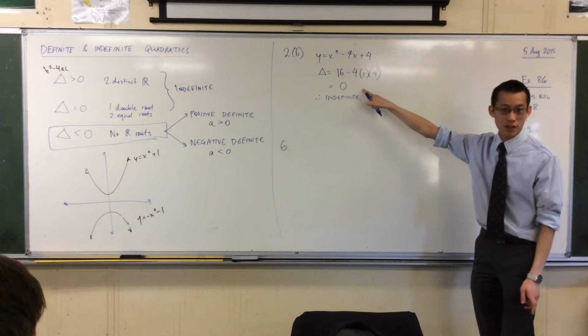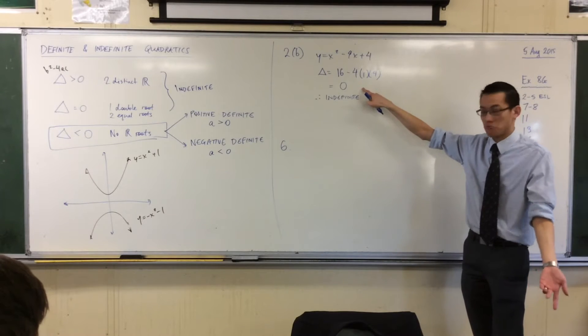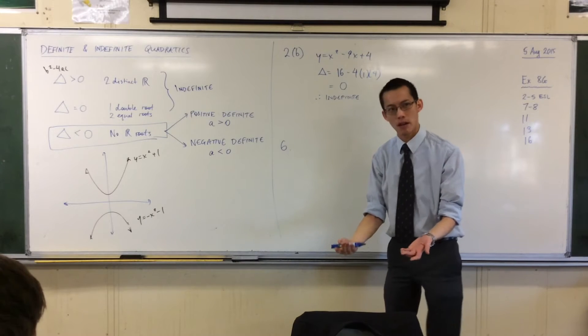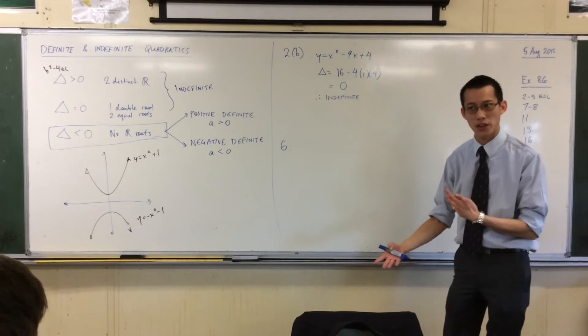If I had gotten a negative value, suppose at this point I got negative 1 or negative 4, as I got in these cases. What would I then go on to do? I know it's definite. How do I know it's positive or negative? Where am I going to look?